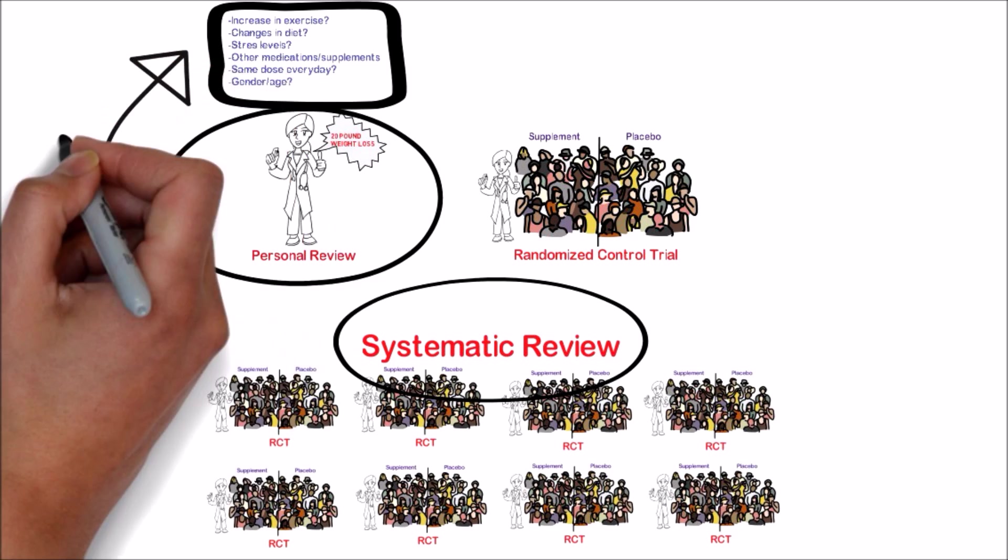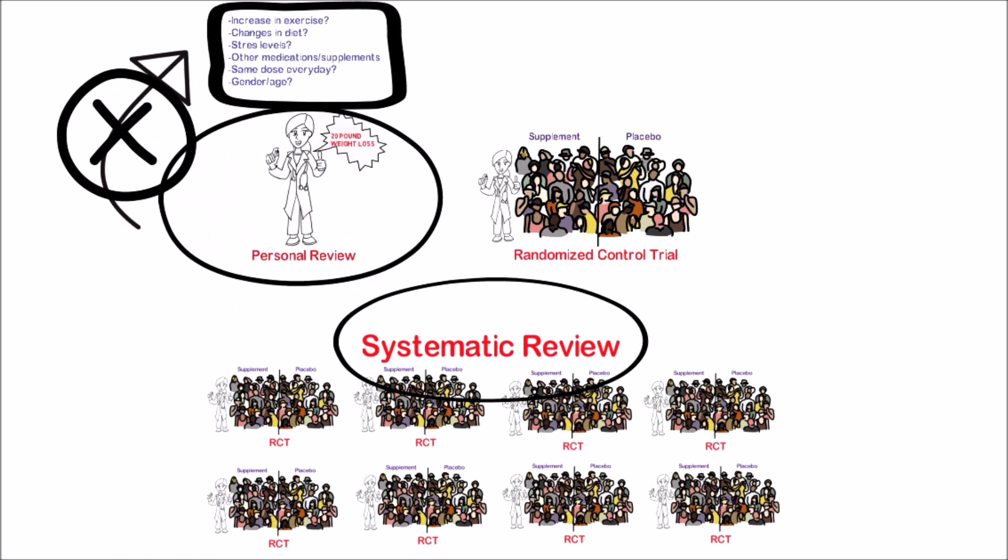The personal review gives me the results of one person and those results may be biased, where a systematic review gives me hundreds of results and controls for bias.